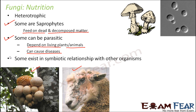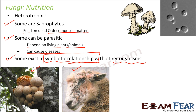Some fungi also exist in a symbiotic relationship with other organisms. This is a new term — symbiotic relationship. It is a special type of relationship where a fungus lives inside the body of another organism; the fungi will derive some benefit from that organism and the organism will also derive some benefit from the fungi. It is a mutual benefit relationship, and symbiosis is a very common type of relationship seen in case of fungi.